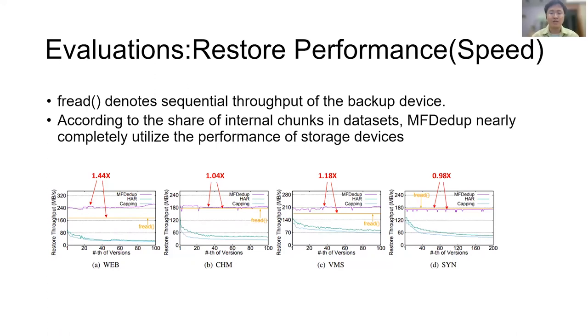We also evaluate actual restore speed. MFDedup achieves up to 11 times higher performance. After read indicates the sequential performance of storage devices, MFDedup's restore performance on 4 datasets are about 1.44 times, 1.04 times, 1.18 times, and 0.98 times of the average. According to the share of internal chunks, we could find MFDedup nearly completely utilizes storage devices' performance.